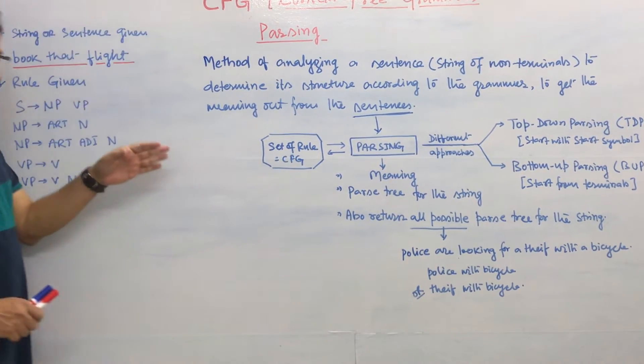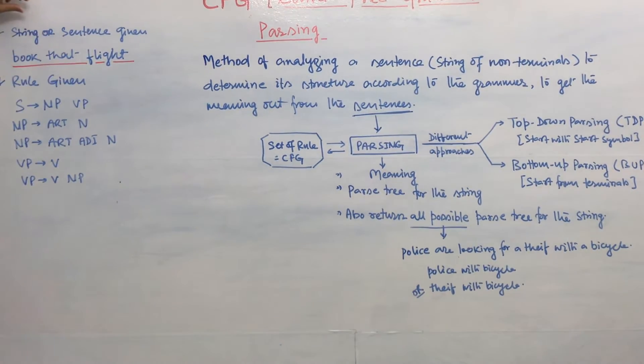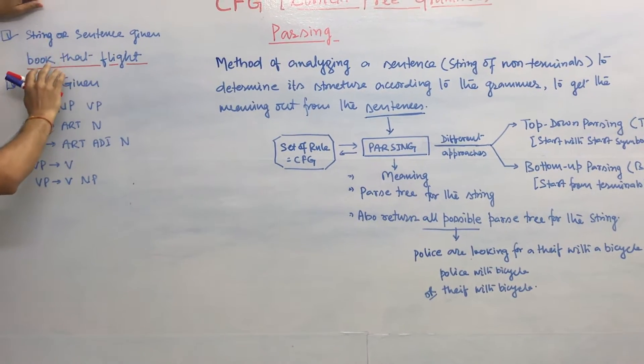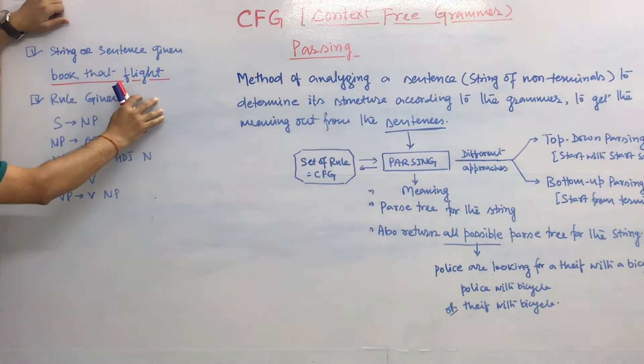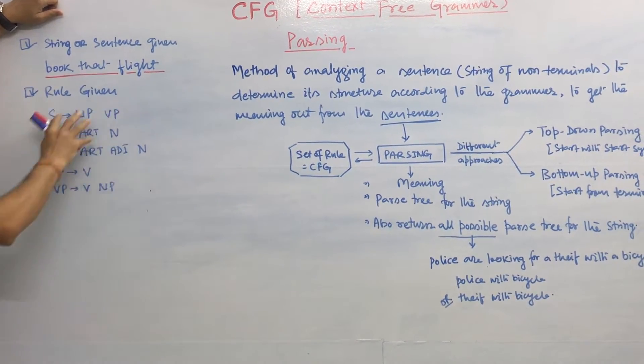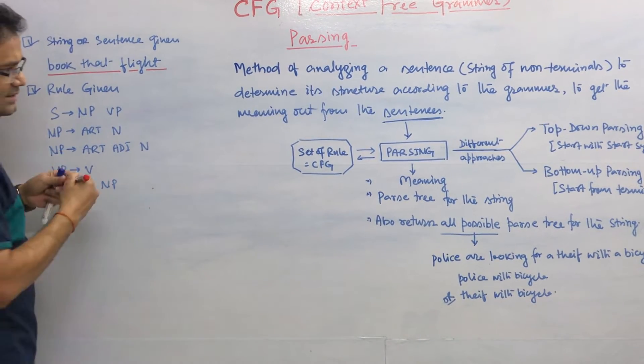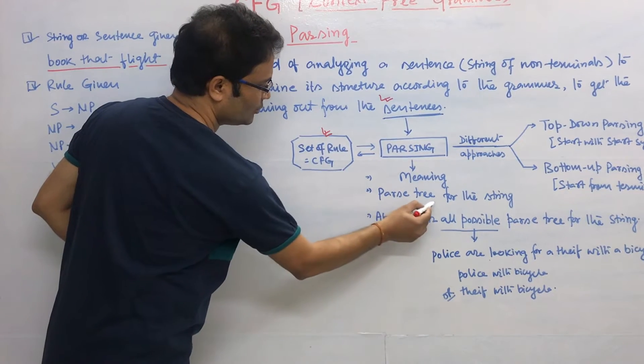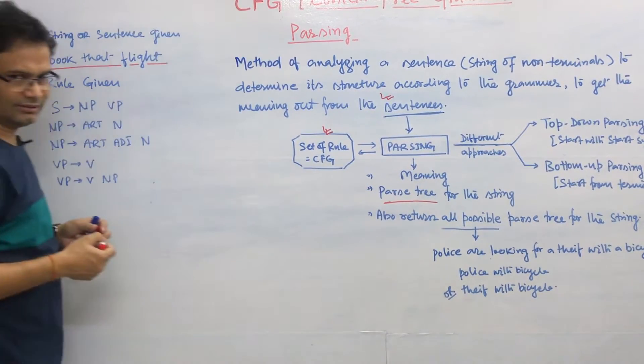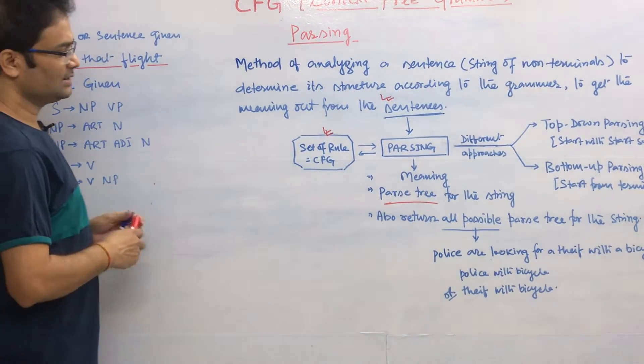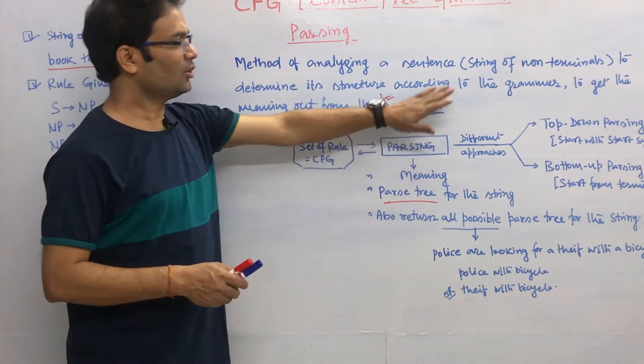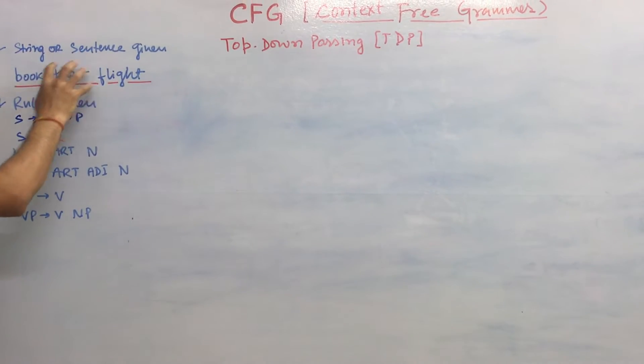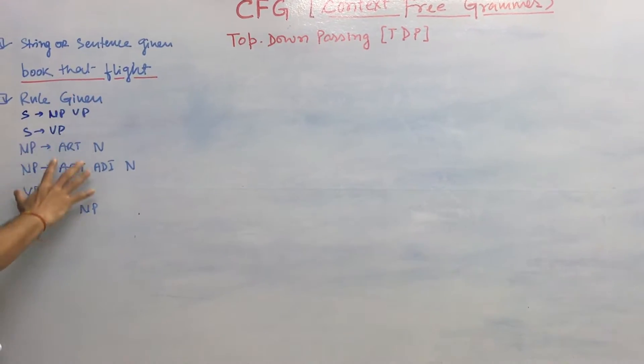Suppose if one sentence has been given, that sentence is called 'book that flight' and the CFG rule is also given. In this case, this is given and this is given, we have to draw the parse tree. Let us draw the parse tree.